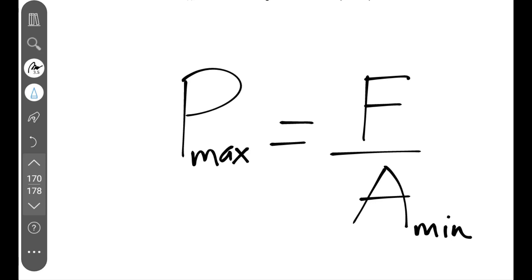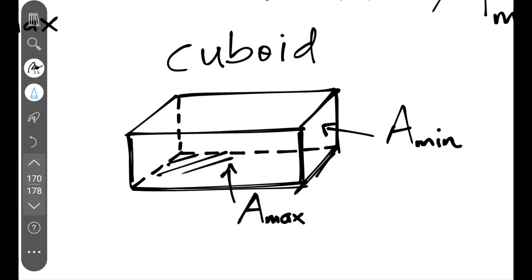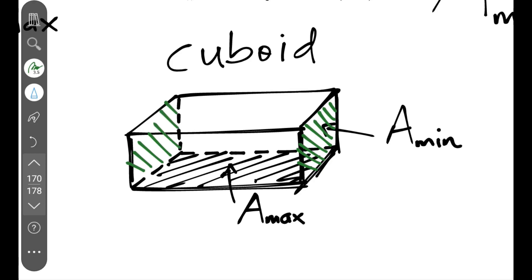Consider a cuboid. The maximum area is found on the largest faces — always two opposite sides that are biggest. The face shaded in green represents the minimum area. The bottom and top faces also correspond to maximum area faces. Once you know which faces give maximum and minimum area, life becomes easy.